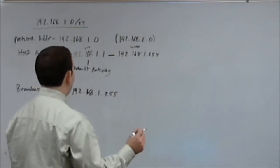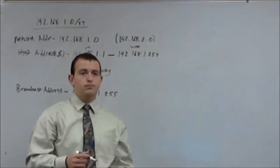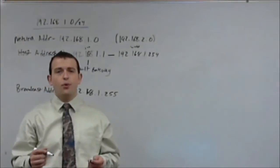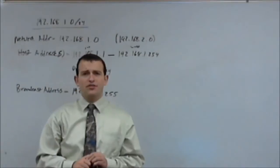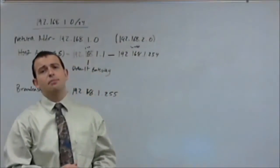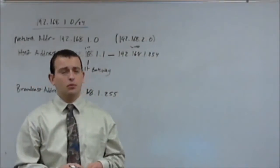So, every other address from the 2 to the 254 are available to hosts whether those be computers, printers, smart devices, whatever it is, they're available to the rest of the hosts on the network.